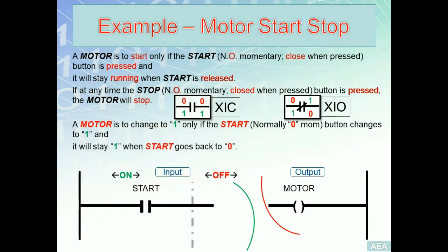The second requirement is: the motor has to stay one when start goes back to zero. Anytime you energize an output using a momentary switch and want to maintain the output on after that momentary condition goes false, you bypass the instruction used to energize the output — in this case start — with a parallel instruction that refers to the output itself (motor), using an XIC. This is the seal-in or latch circuit. A separate tutorial will cover the scan sequence concept to illustrate latching in more detail.